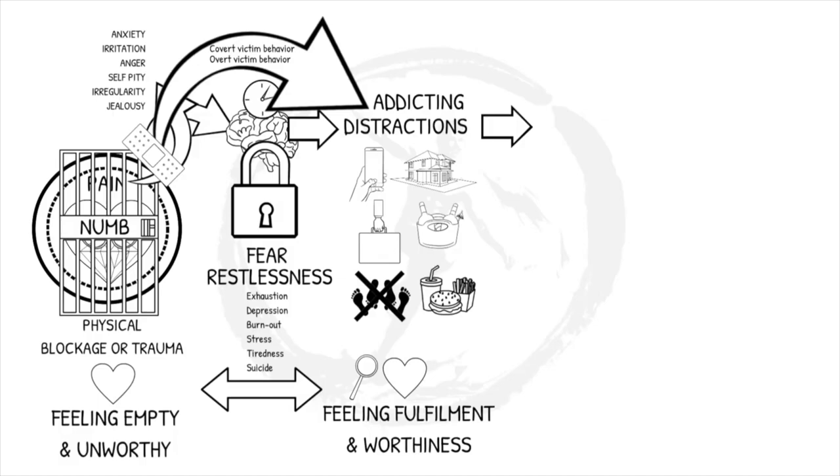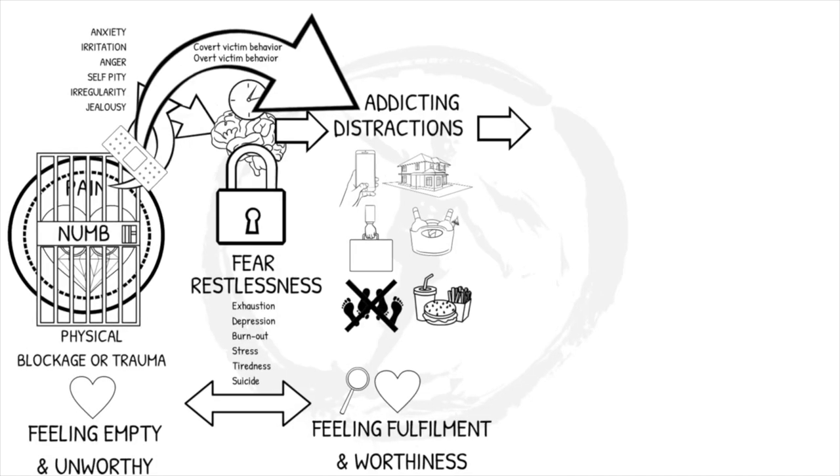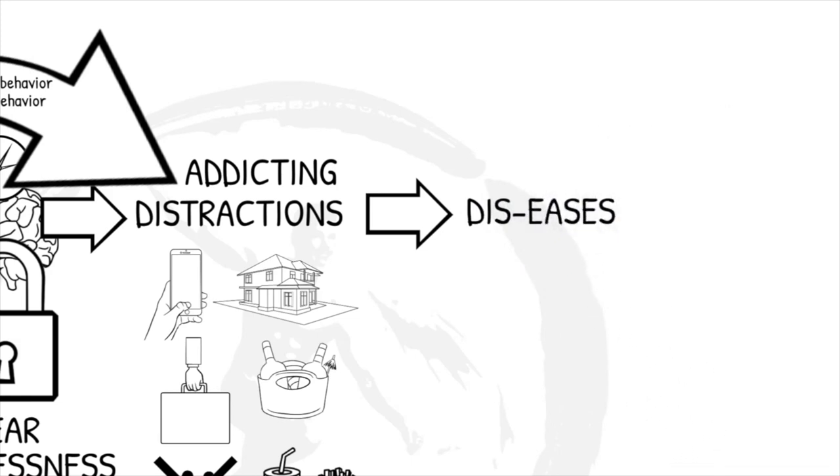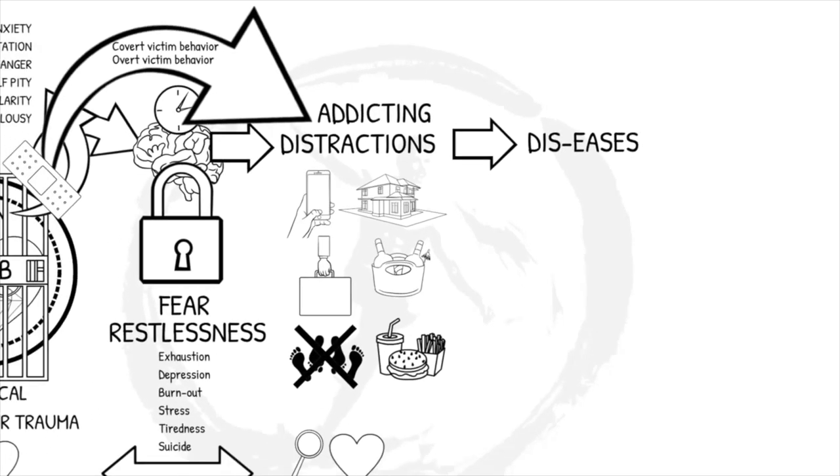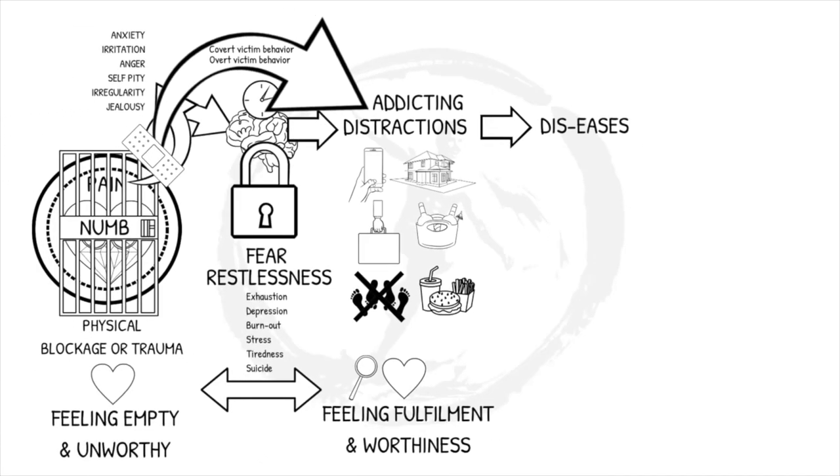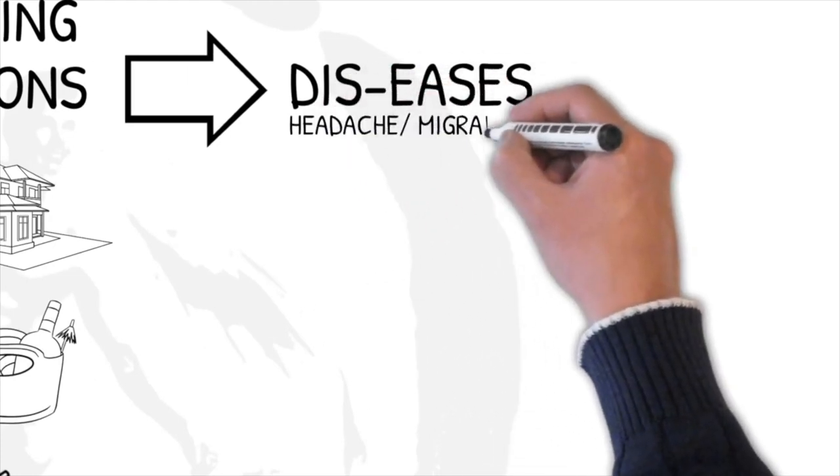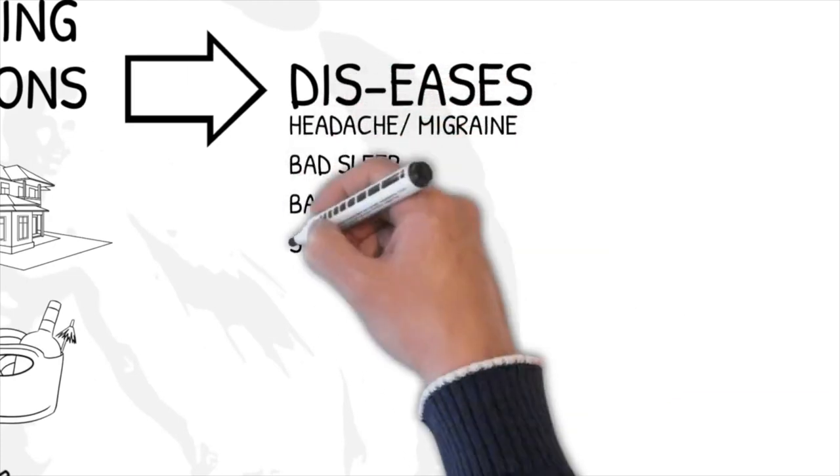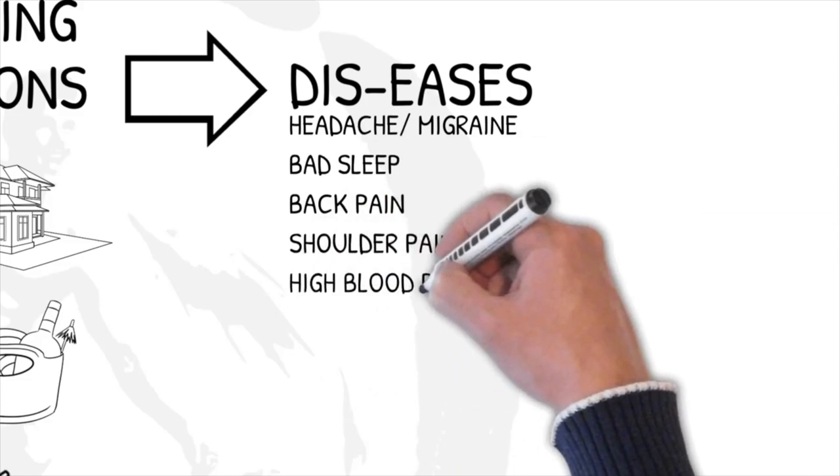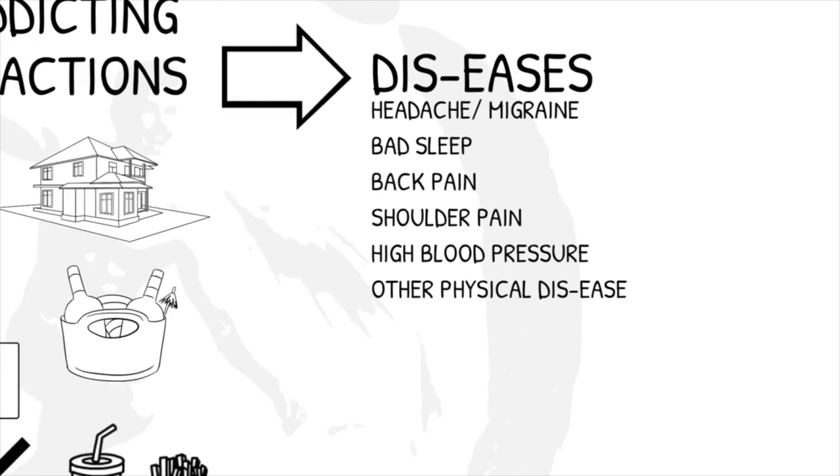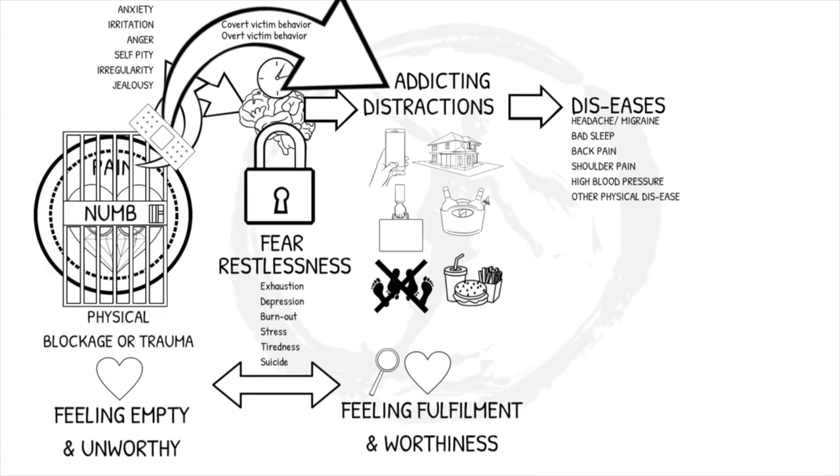The more we keep blocking our core and cramping our body, the more diseases we encounter. Diseases are helping warning symptoms to help warn us that we are still blocking our healthy flow and are heading in the wrong direction. Disease symptoms like headache, migraine, bad sleep, back pain, shoulder pain, high blood pressure or other physical diseases are only symptoms of being blocked for too long.